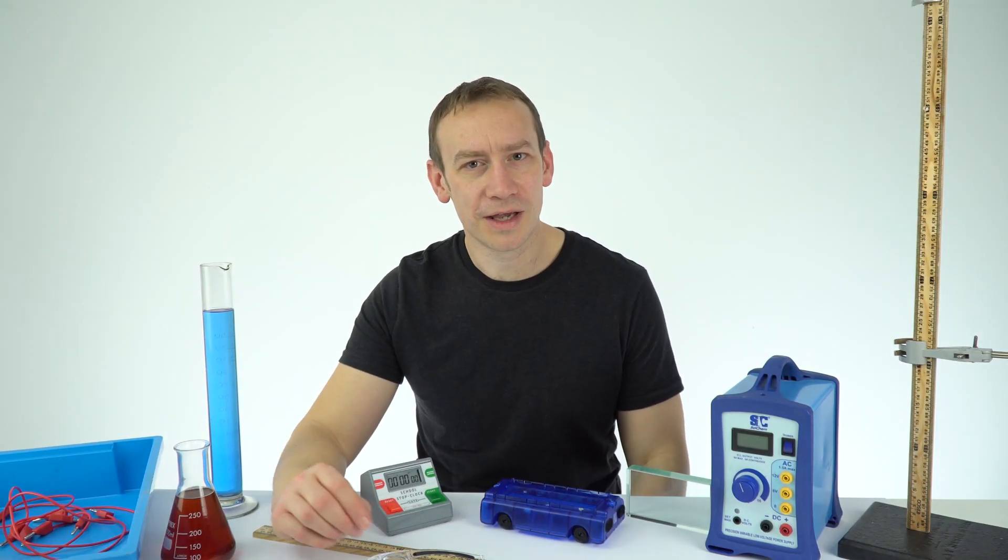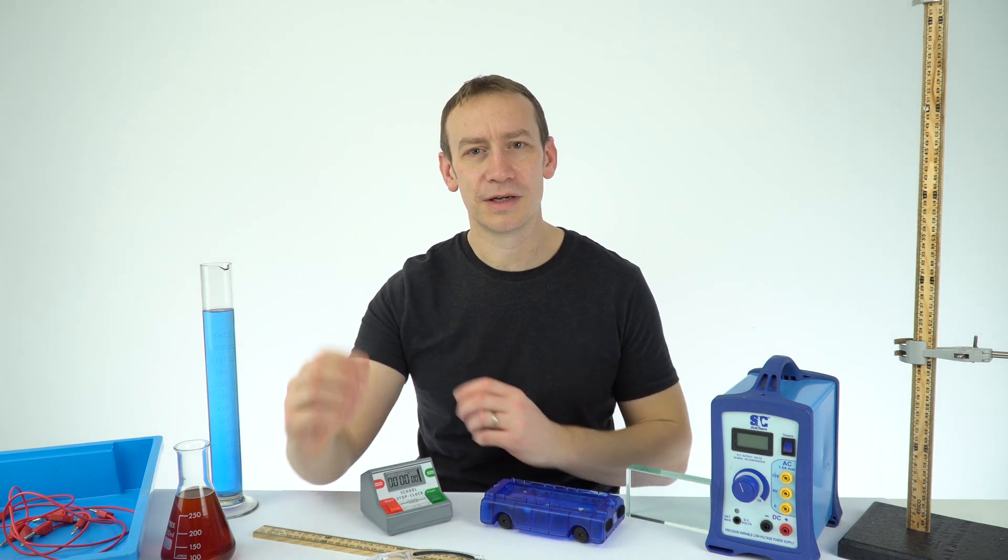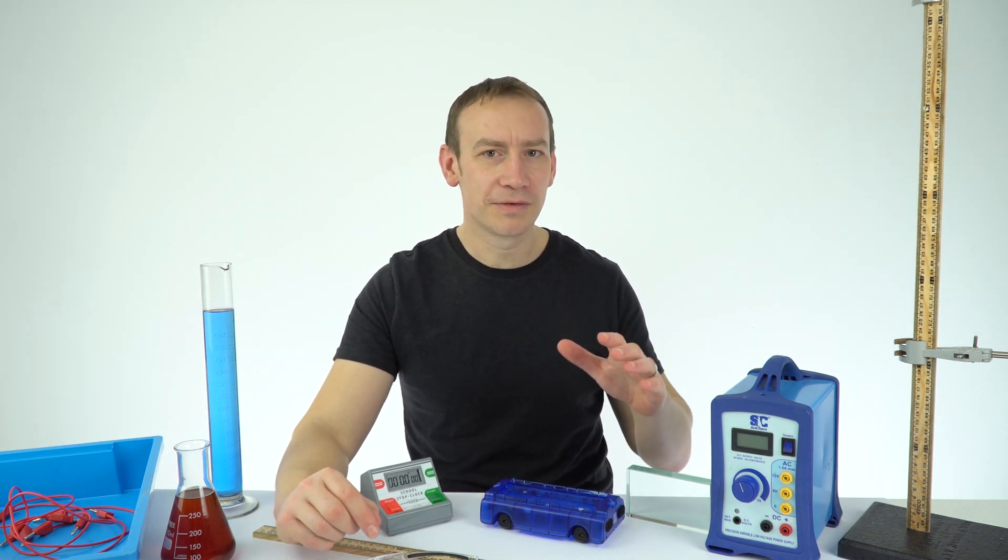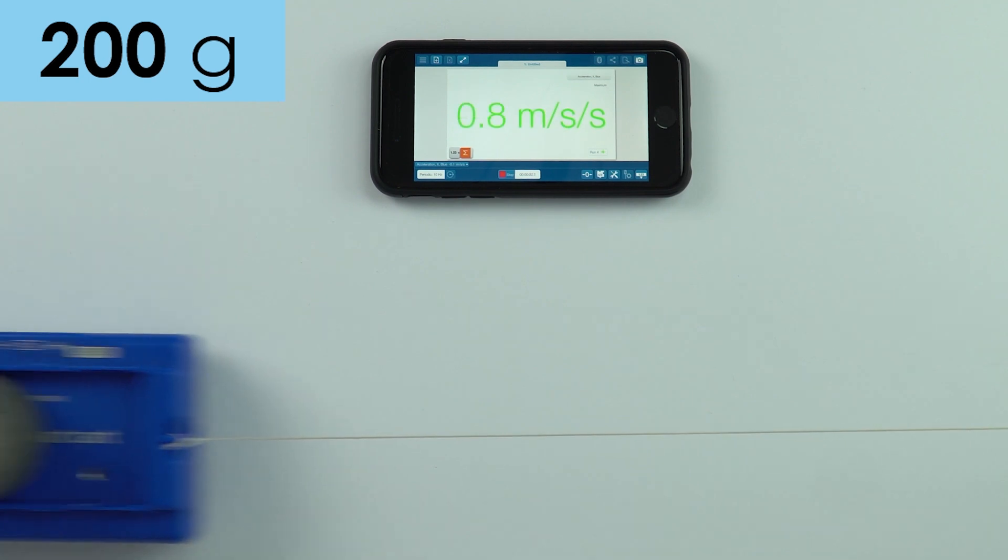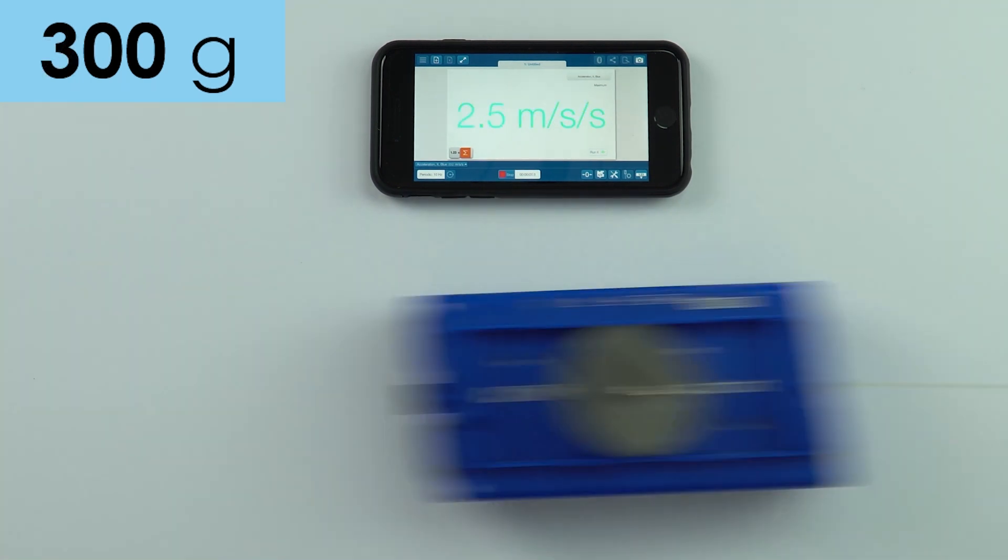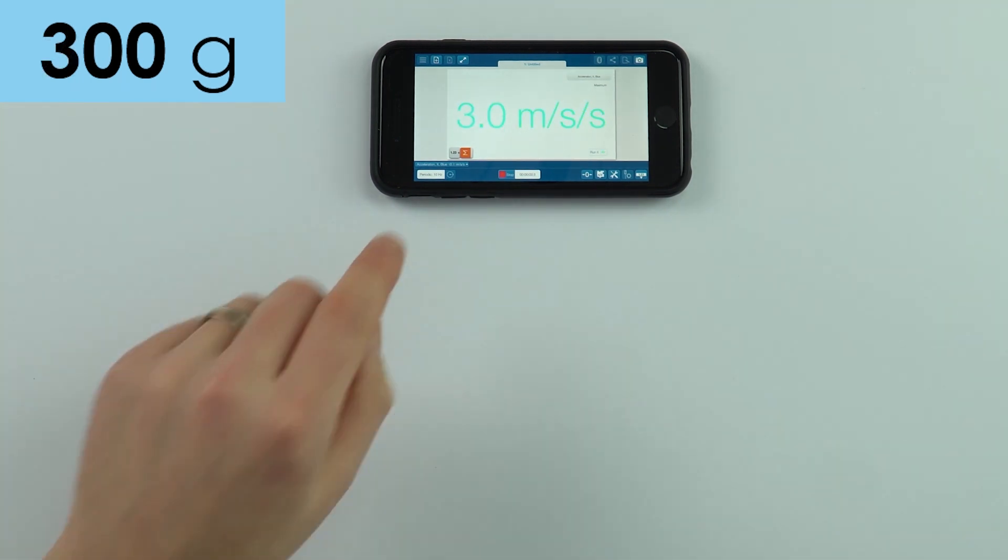And then the third type are investigations where you look at the link between two different quantities. You'll have your independent variable that you're changing and then you can see how that affects your dependent variable, and often that's when you then plot a graph to look at your data.